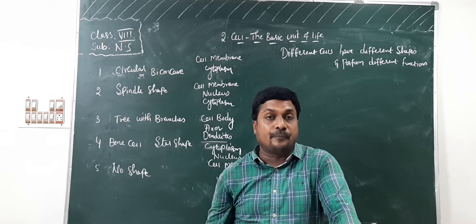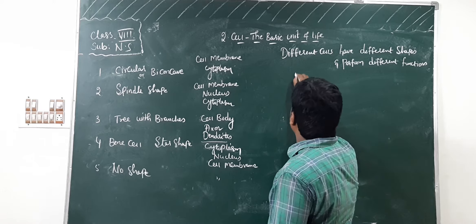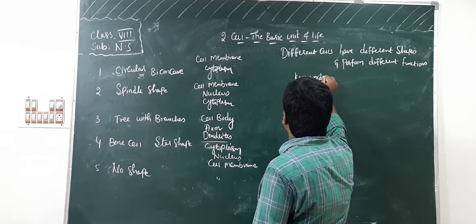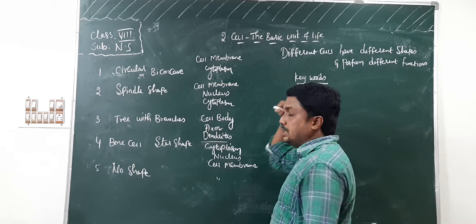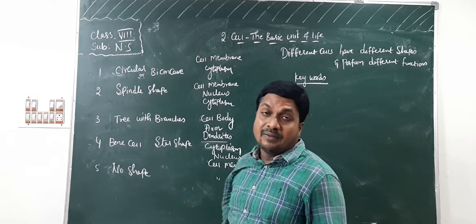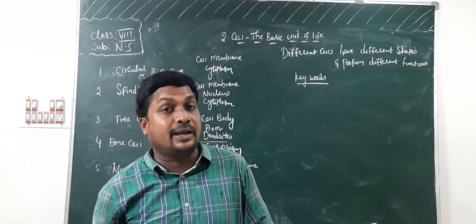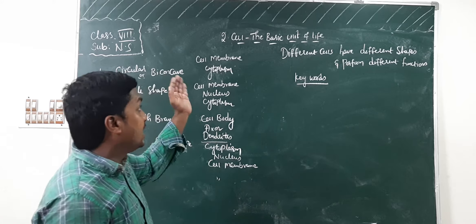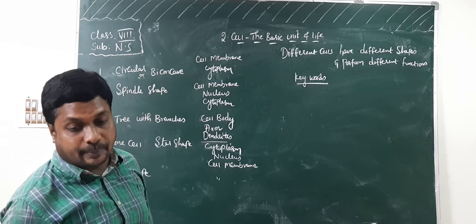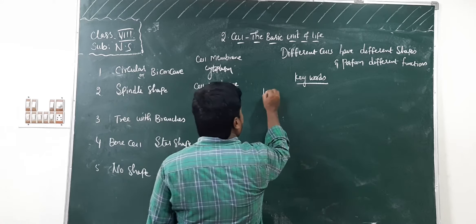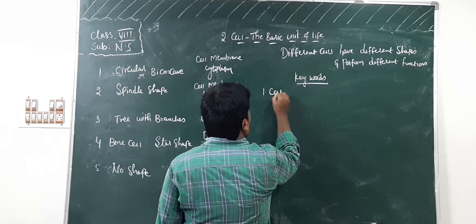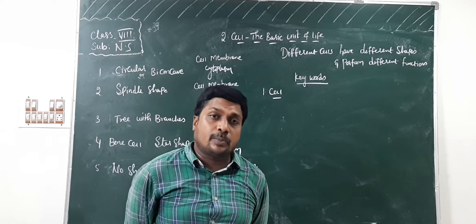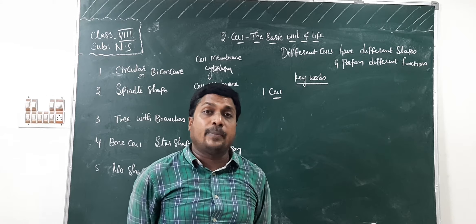Now I will explain the keywords present in lesson 2. With the help of these keywords, you can revise the total lesson — 'Cell: The Basic Unit of Life.' The first keyword is 'Cell,' observed by Robert Hooke. Cells can be seen with the help of a microscope.